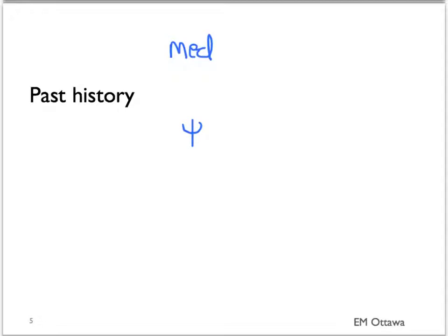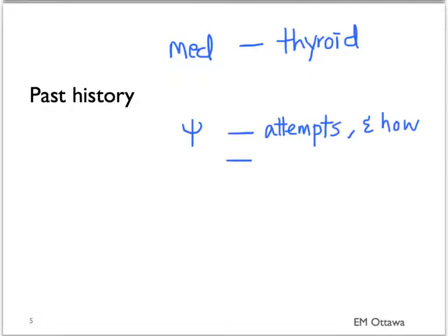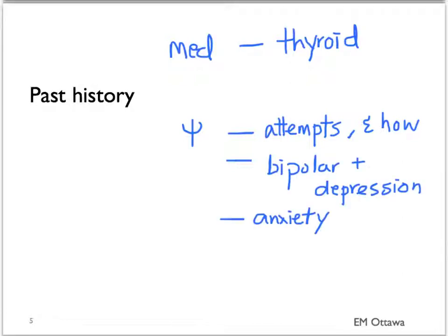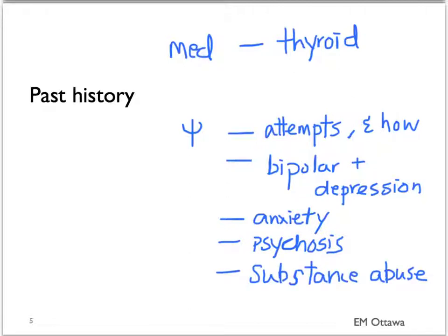Past history includes past medical history and past psychiatric history. Relevant past medical history includes thyroid issues and any other significant medical history. For previous psychiatric history, we need to know about previous suicidal attempts and the methods used. Previous mood disorders include bipolar disorder and depression, anxiety disorder, psychosis, and substance abuse. Family history of psychiatric illness is also helpful.